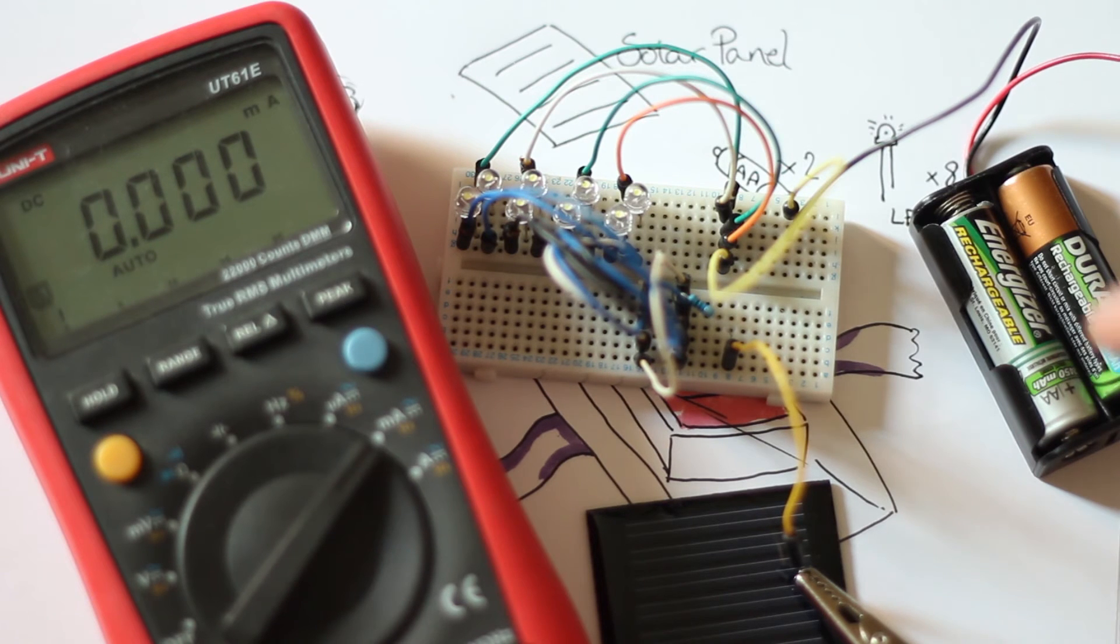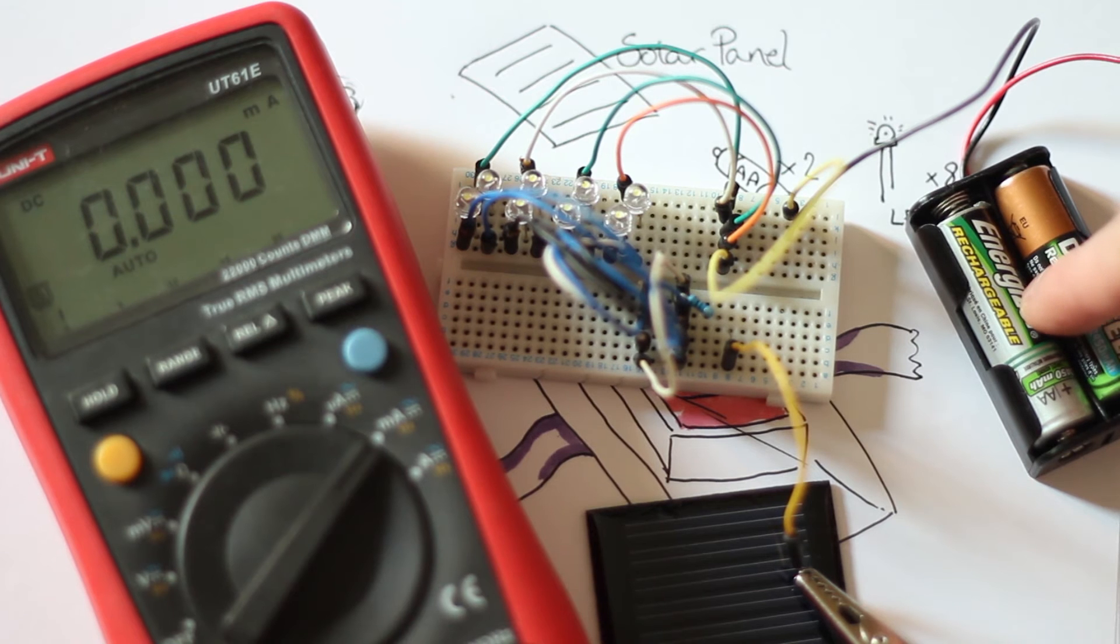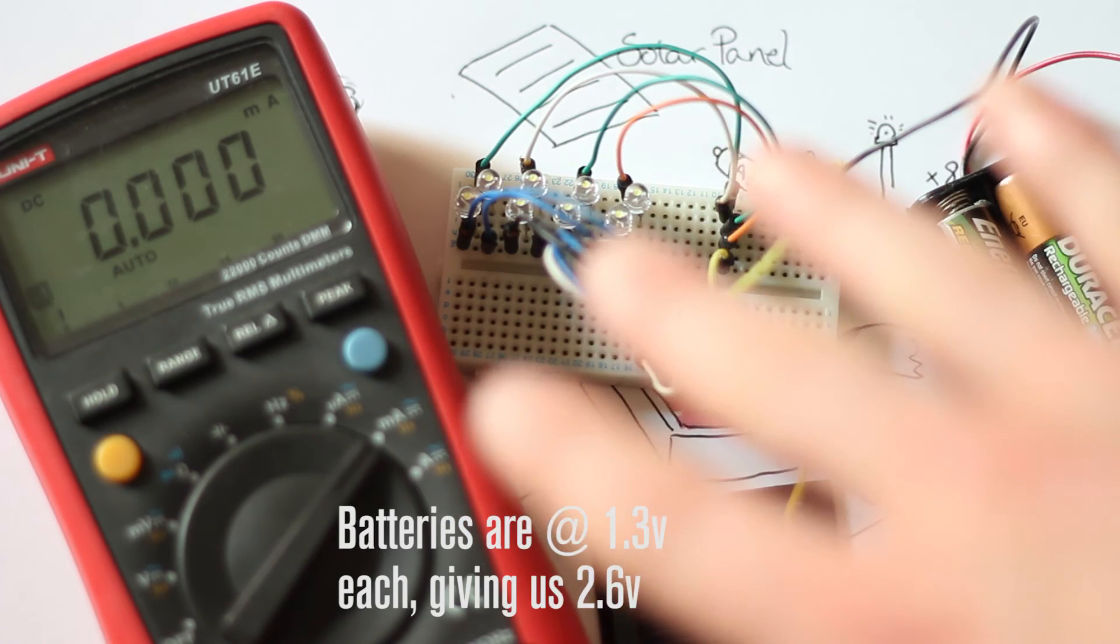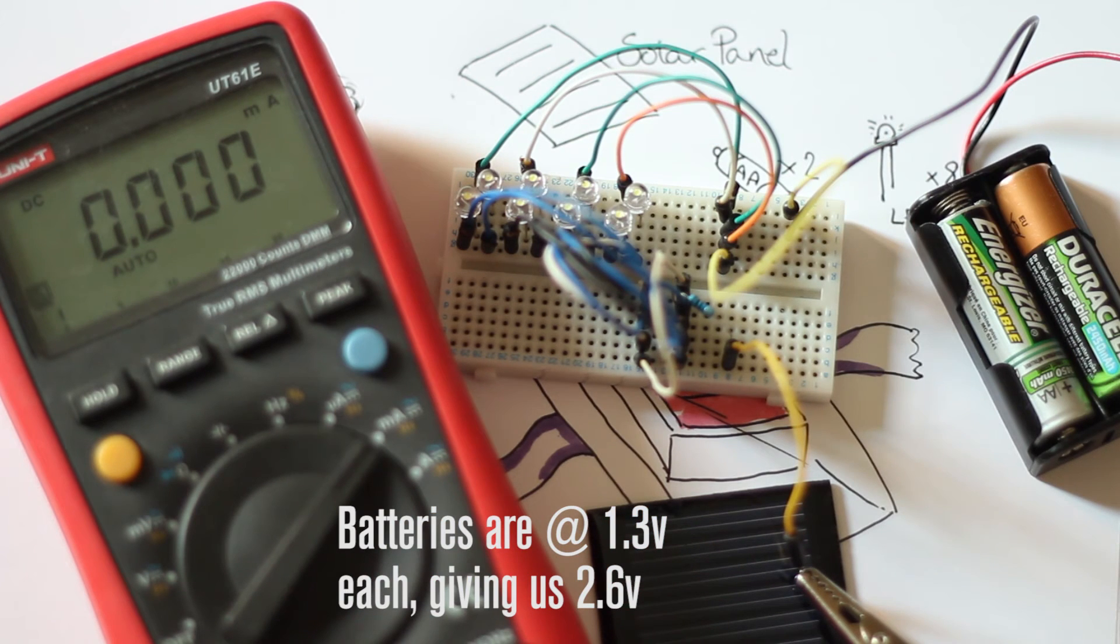I've got my multimeter all ready to go. We've got our batteries here—they're currently sitting at 1.3 volts. I expect it to tell us we're using anywhere from 0.5 milliamps to 2 milliamps. It depends on the voltage of the battery.